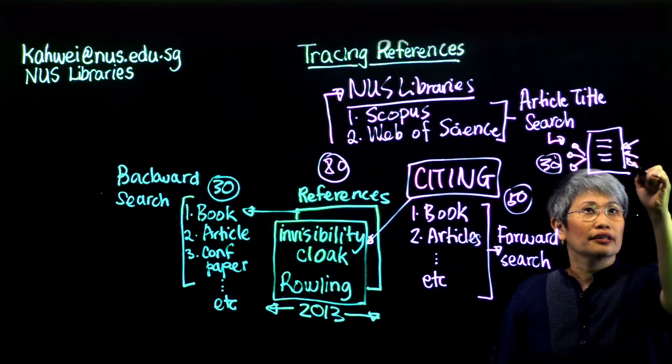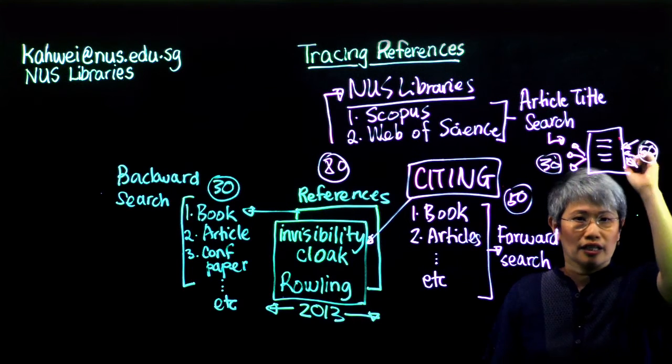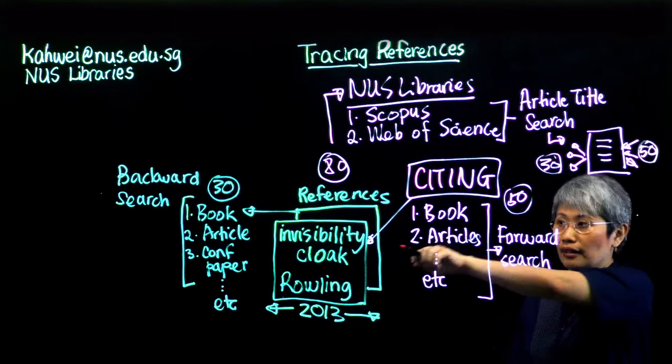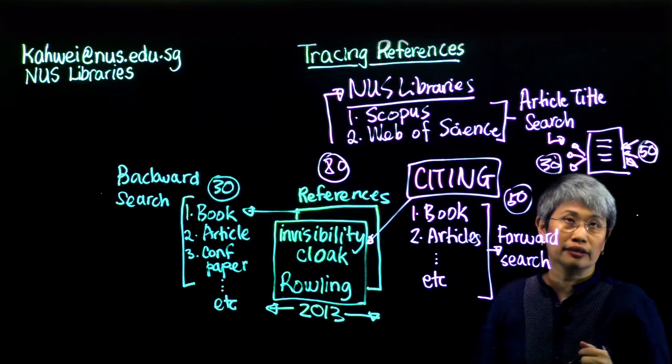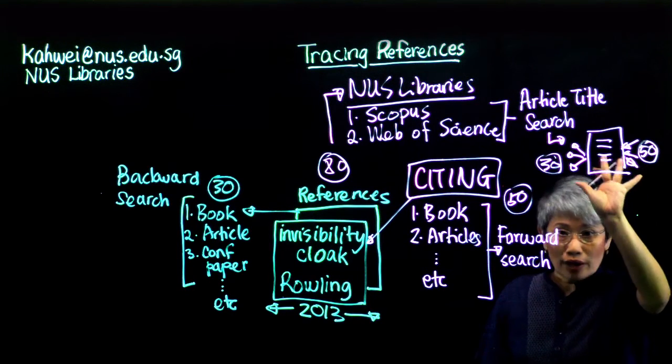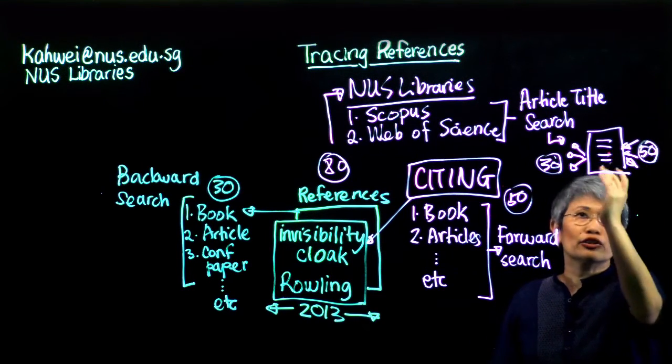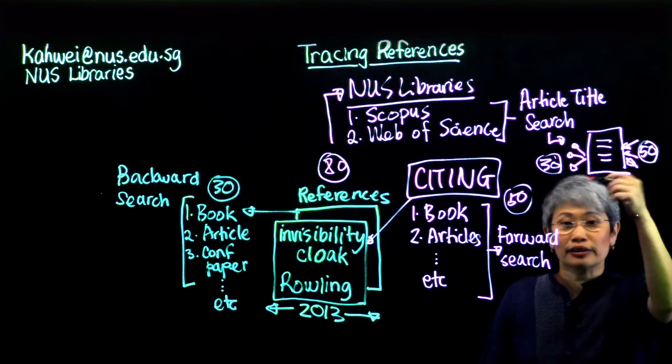And then you will also find the 50 that have been citing this Invisibility Cloak article. So in one database with one record, it's easy to find all these journal articles because they are all linked.